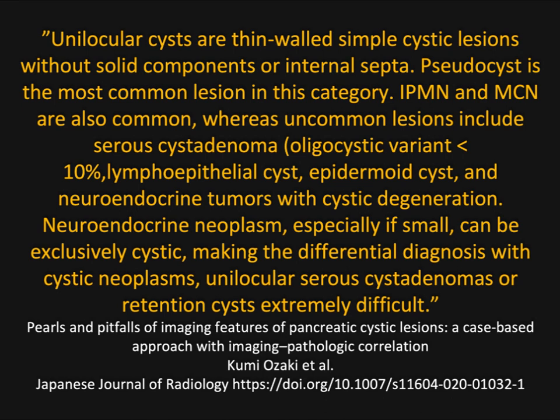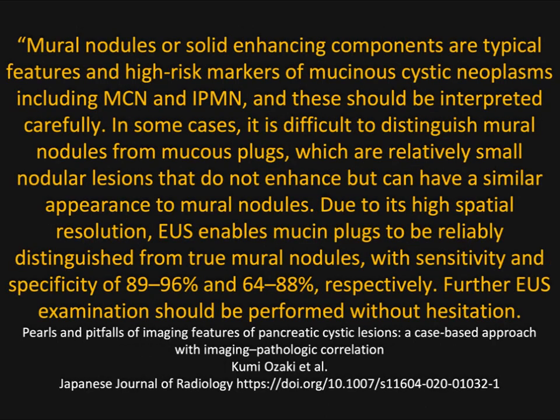Unilocular cysts are thin-walled simple cysts without solid components or septations. A simple unilocular cyst can be a pseudocyst, but also IPMNs and MCNs fit into this category. Occasionally serous cystadenomas — the oligocystic variant — though in most cases serous cystadenomas have septations or central calcifications. With neuroendocrine tumors you are going to get enhancement in the wall, so I think it's not that difficult to diagnose those.